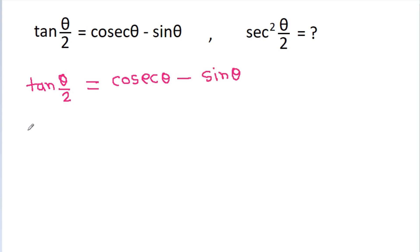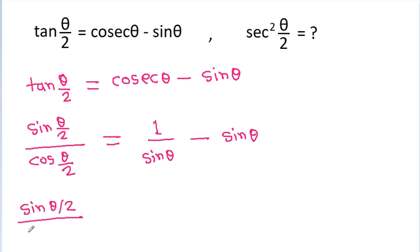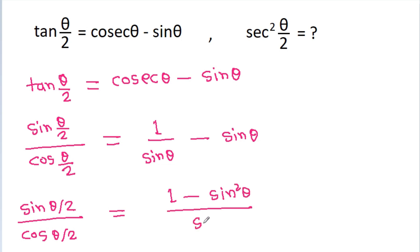We know that tan(θ/2) is sin(θ/2) by cos(θ/2), which is equal to cosθ minus sinθ. And cosθ can be written as 1 by sinθ minus sinθ, giving us sin(θ/2) by cos(θ/2) equals (1 minus sin²θ) by sinθ.